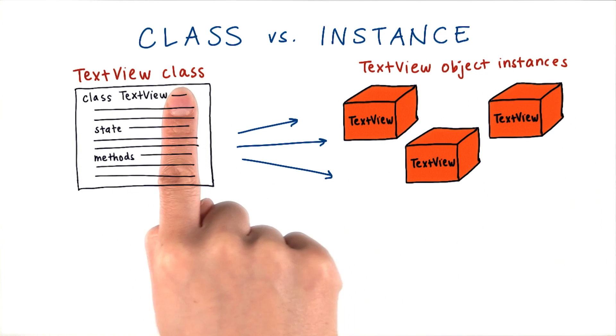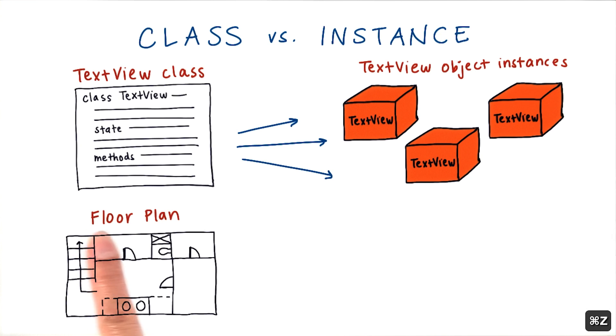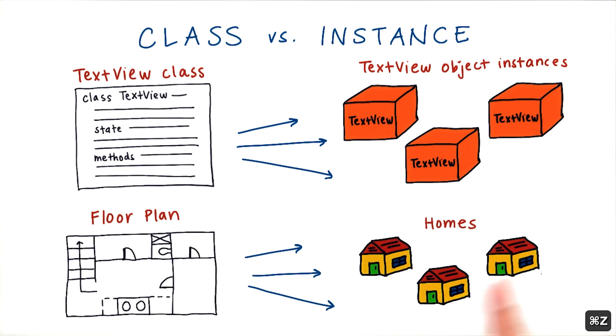You may find it hard to distinguish between a class and an object instance, but that's okay. It takes some time to get used to. Here's an analogy to help you. You can think of it as creating a floor plan for a house. You can use this floor plan to create the actual homes. Each of these homes can be slightly different, but they're all based off of this base floor plan. It's important to note that the floor plan is not a house itself. It's just a plan. Similarly, the textview class is used to create these object instances. So these instances are the ones with the actual text values, text color values, and text sizes.